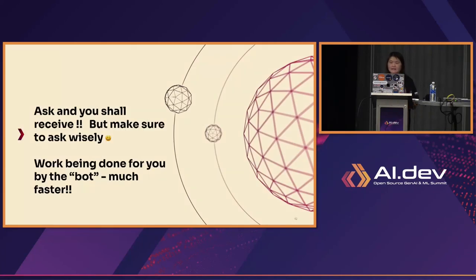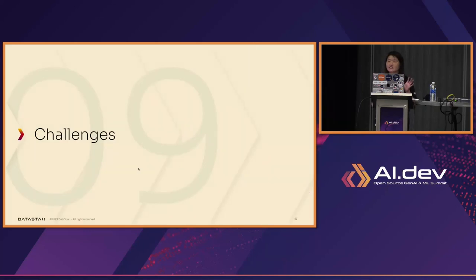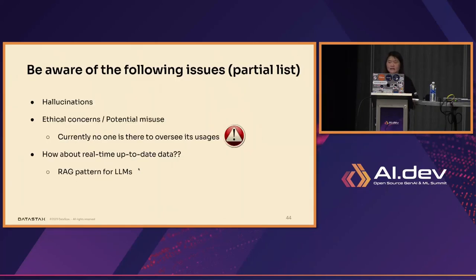Gen AI is a good thing — you can ask and you will always receive, but make sure you ask wisely because there are challenges too. There are hallucinations — if there's no data in there, it could give you back a wrong answer, so be very careful. There are also ethical concerns when working with Gen AI, and also the real-time lag, but you can try to address that using the RAG pattern for LLMs.